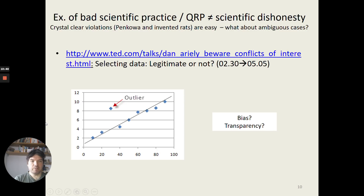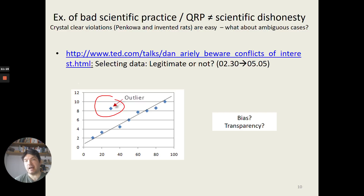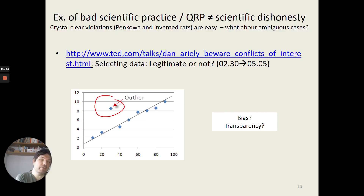This was a more ambiguous case. As Ariely described, there was an outlier ruining statistical significance, and he noticed it because it went in the opposite direction from what was expected. Had the outlier been in the 'right' direction, he probably wouldn't have even looked at the data. This is a very good example of how cognitive biases affect researchers — we only scrutinize data when it doesn't fit our preconceptions. If it had fitted, we wouldn't have noticed it and wouldn't have considered removing the outlier.